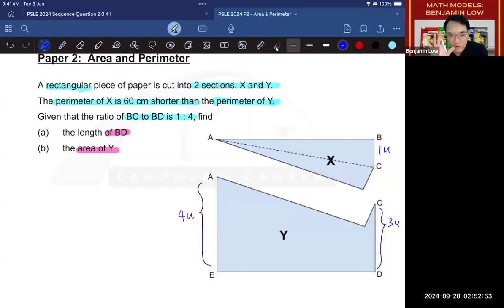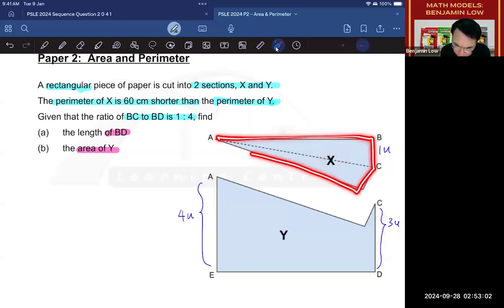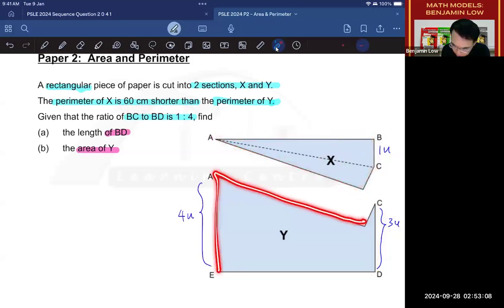But remember that this line and this line is actually the equivalent of the line over here. It's just that it was cut up. So if that is the case, then we know that if this is 1 and this is 3, then we also know that this is 4 units. Okay, so this is the first thing you need to understand. Second one, they are telling you is that this X here, this piece X, has a perimeter that is 60 cm shorter than the perimeter over here.